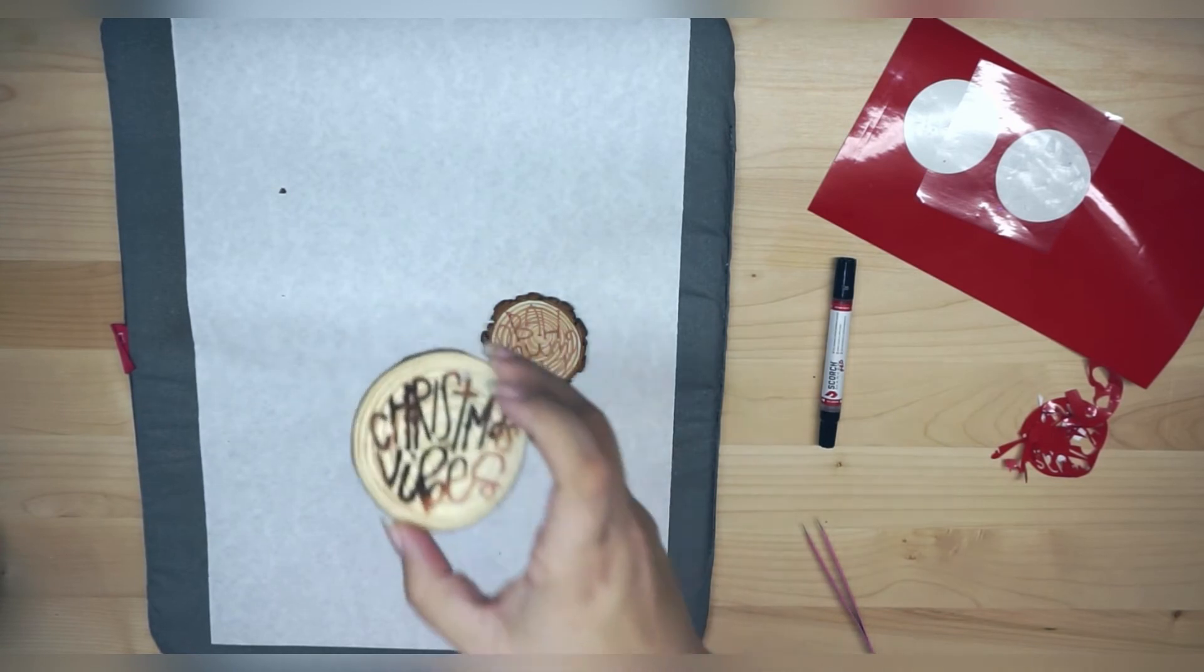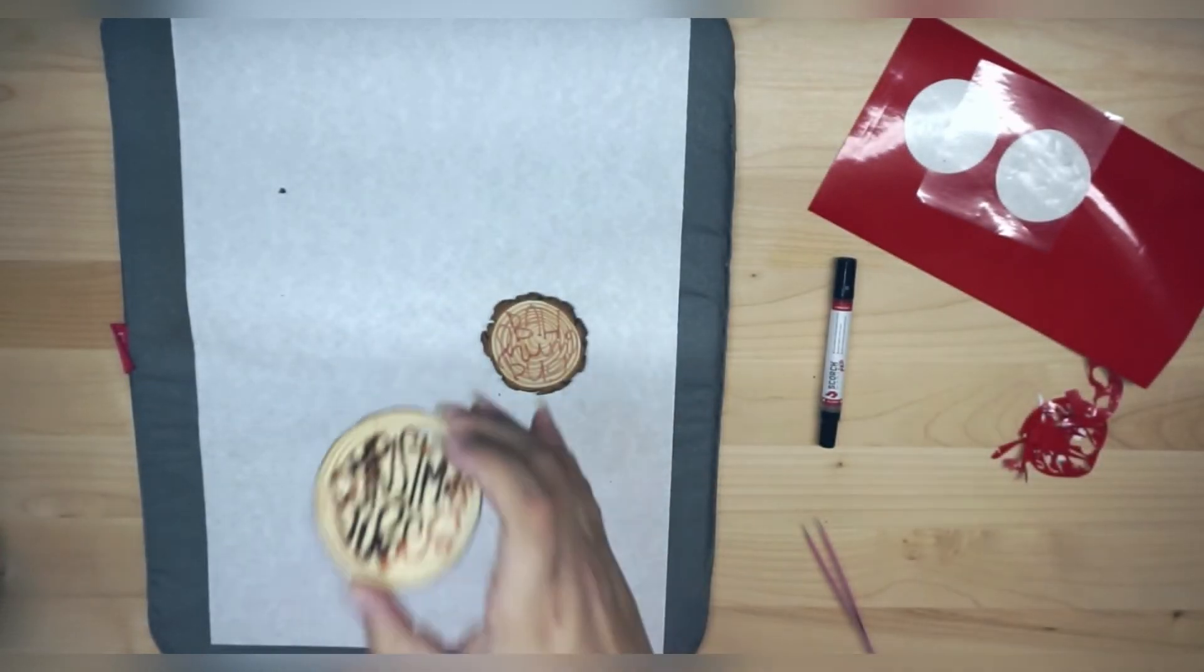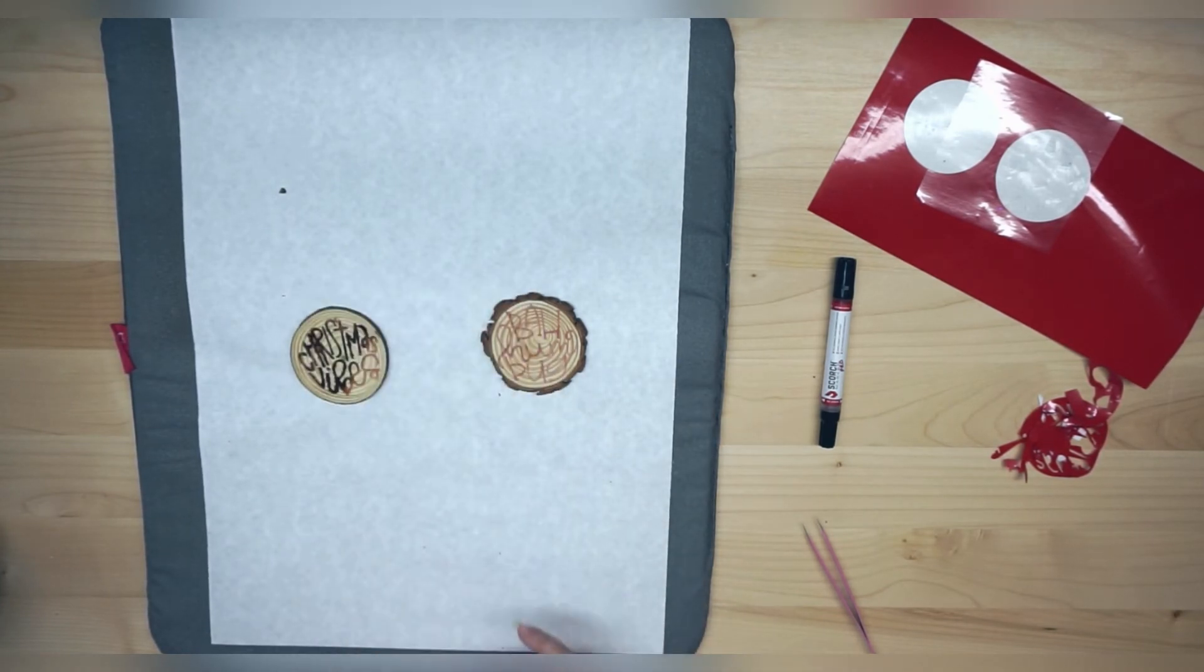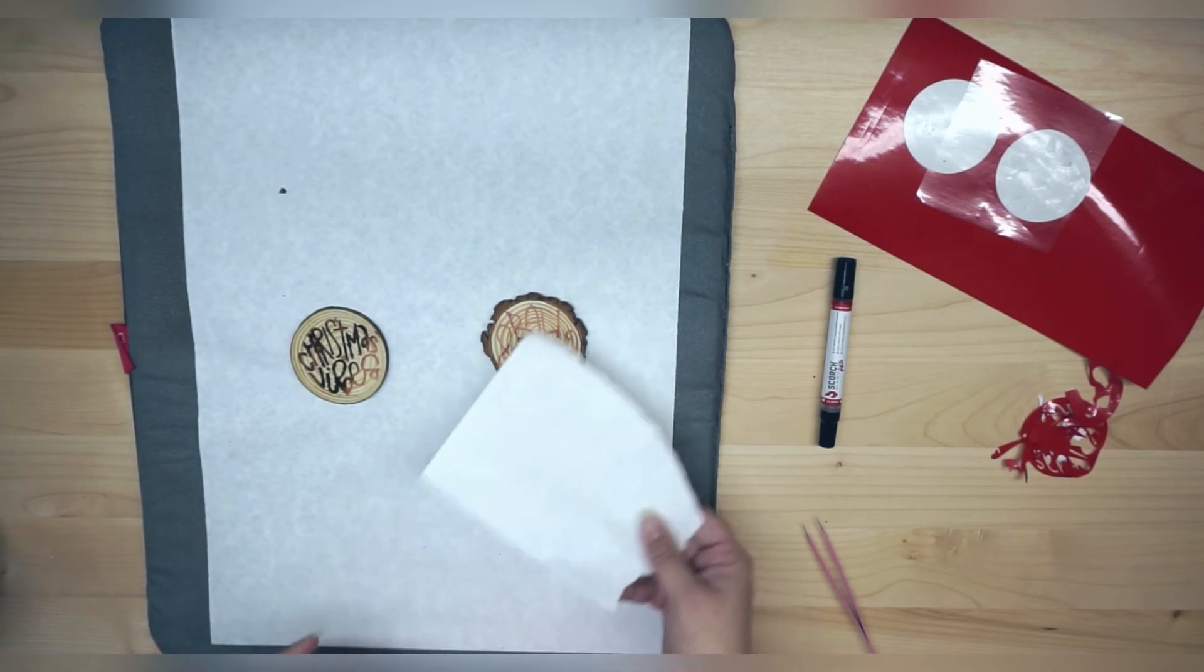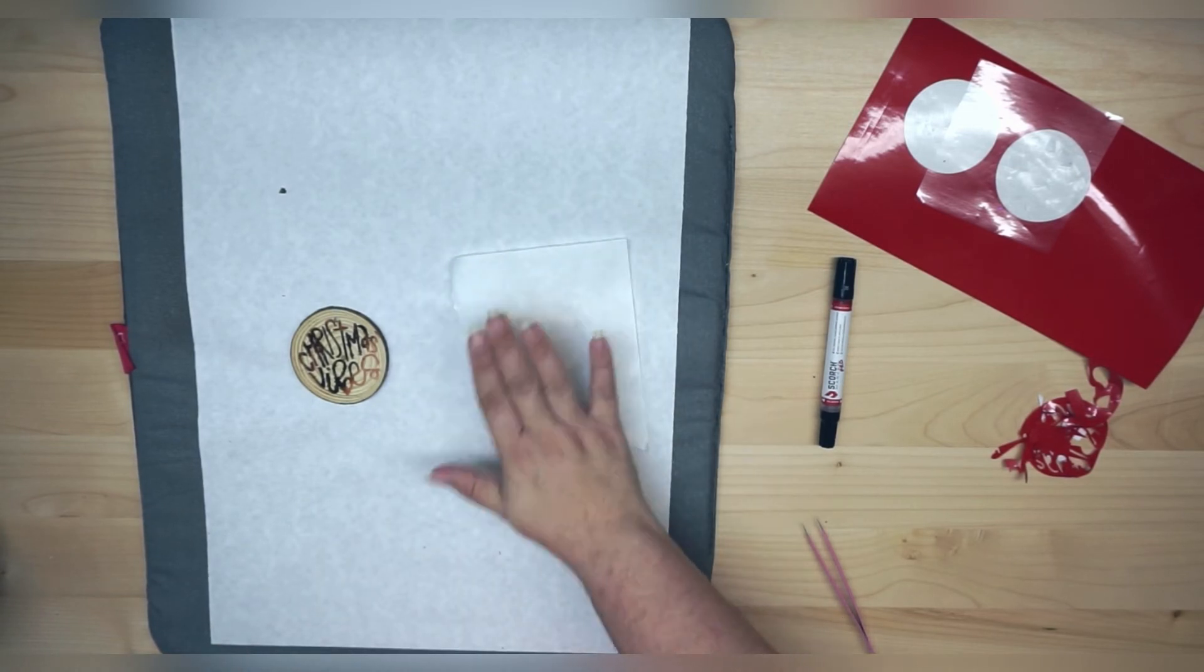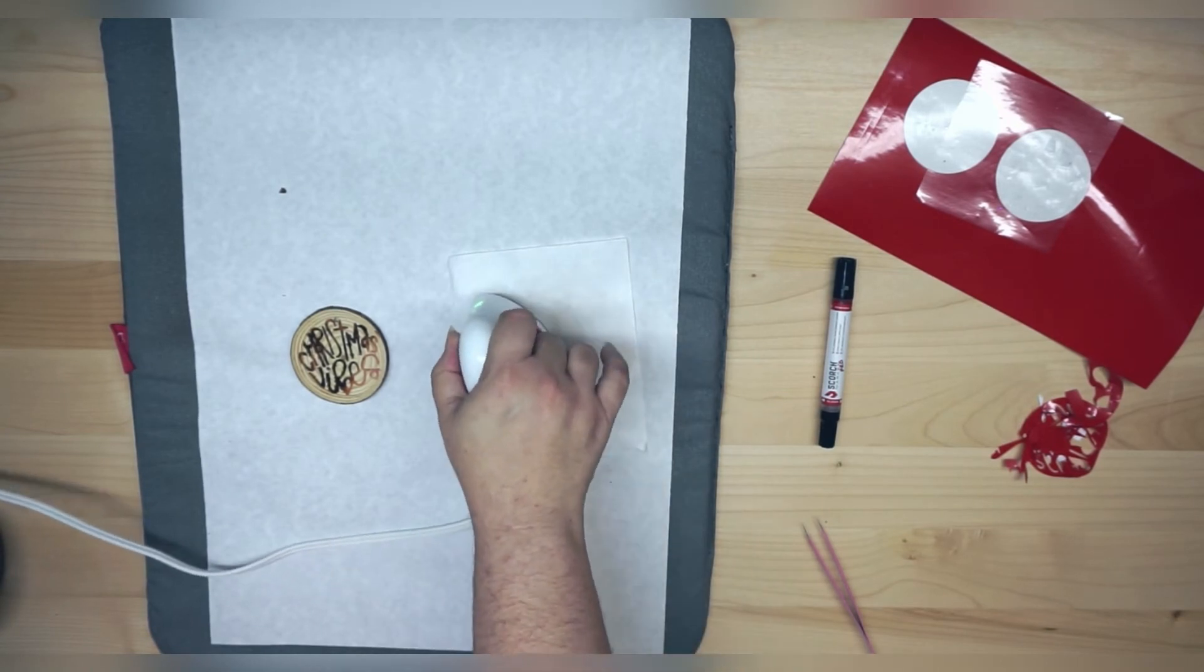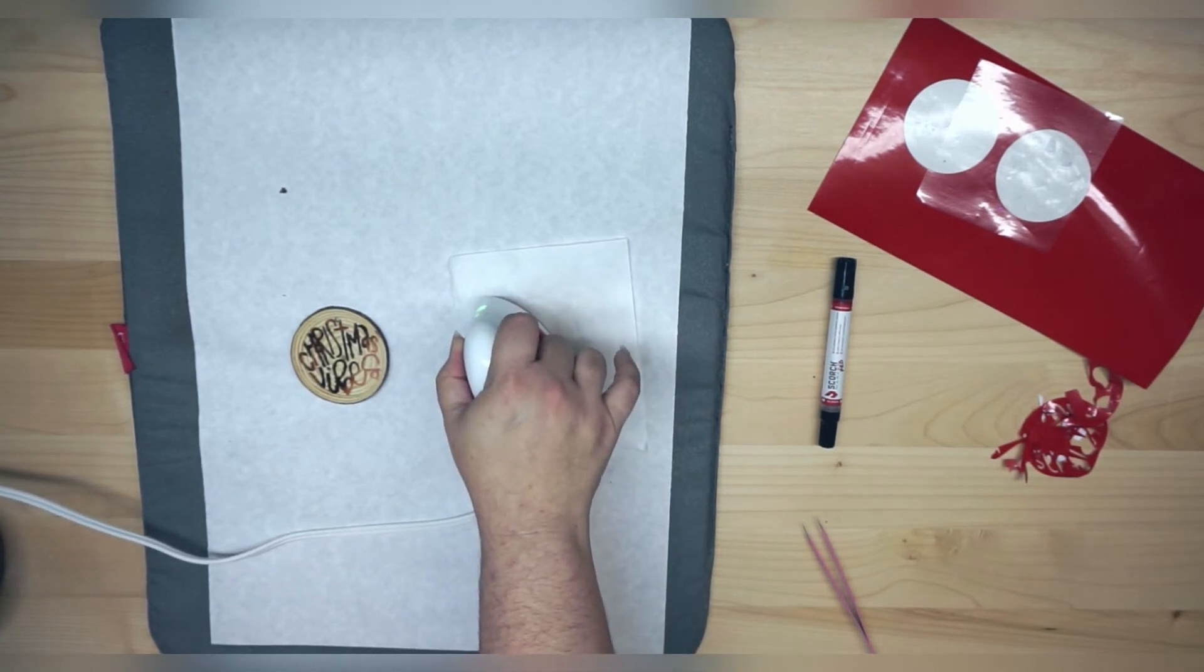But between the bleeding, and then the heat gun results, I decided to try something different. So you guys get a twofer in this video. So what I'm going to do, I tore off a little piece of butcher paper here, because I don't want to mess up my EasyPress, but I have my little baby EasyPress here.